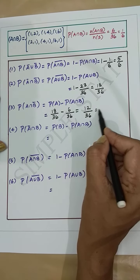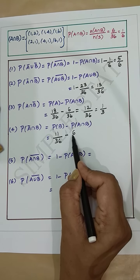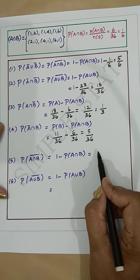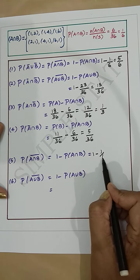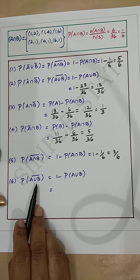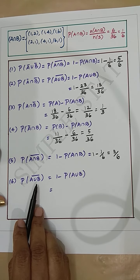Fourth subdivision: probability of A-bar intersection B equals probability of B minus probability of A intersection B, which is 11/36 minus 6/36 = 5/36. The last subdivision: probability of (A union B)-bar equals 1 minus probability of A union B, which is 1 minus 23/36 = 13/36.